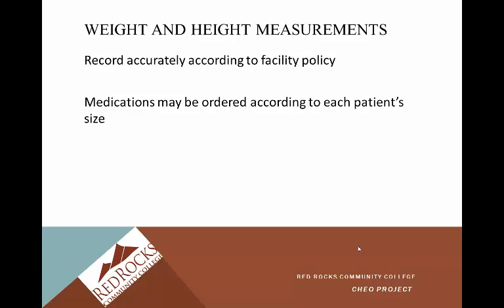A three-month-old infant versus a 150-pound adult — just be aware of how important accurate weight is, because there are decisions made based on the weight you give to your health care provider. You want to make sure it's very accurate.